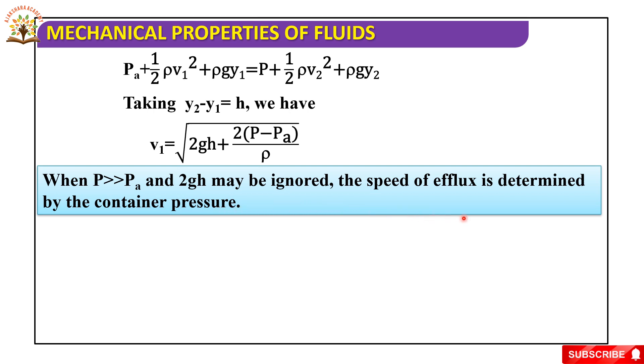When p is much greater than pa and 2gh may be ignored, the speed of efflux is determined by the container pressure. Such a situation occurs in rocket propulsion.